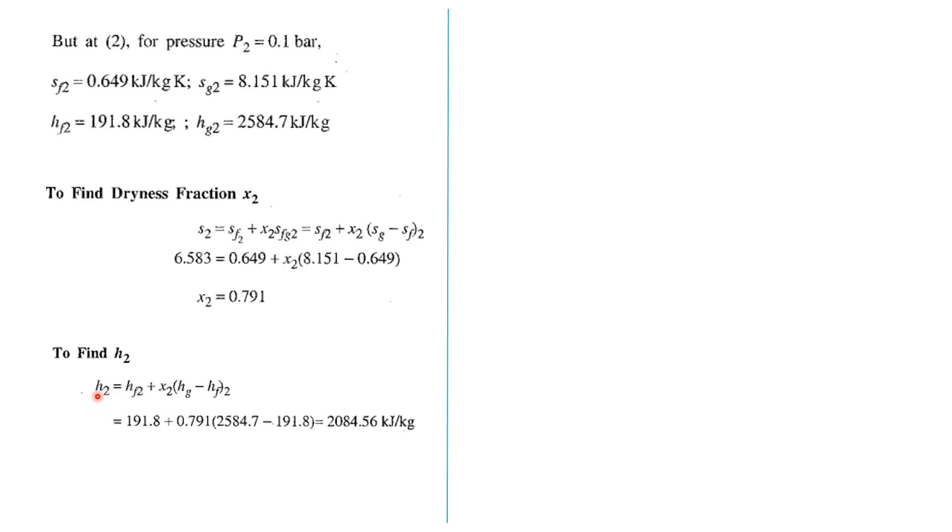Now we got h1 and h2. You can find the velocity of steam when inlet velocity is negligible.